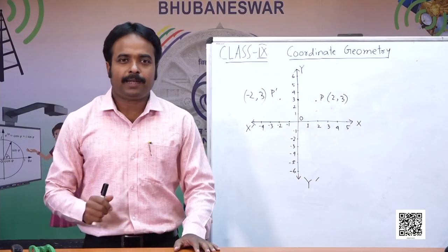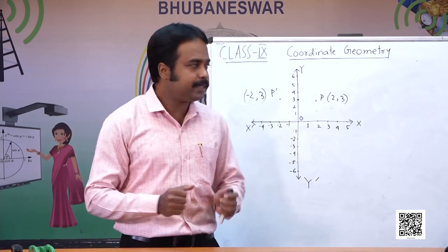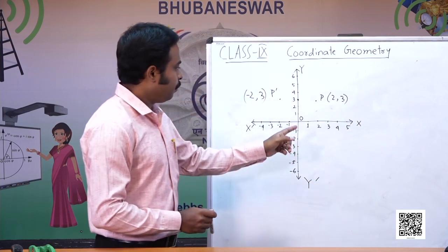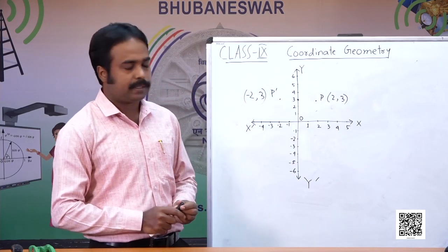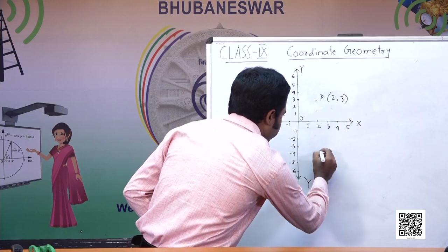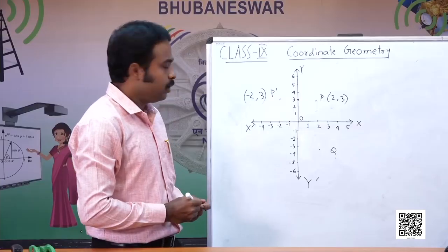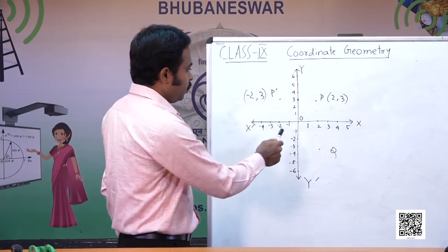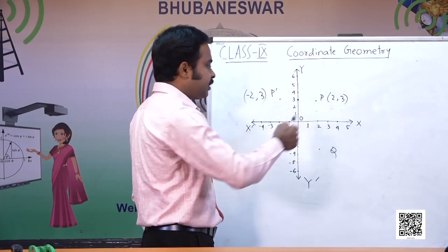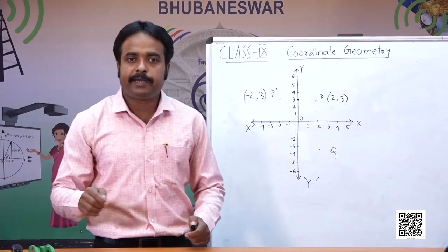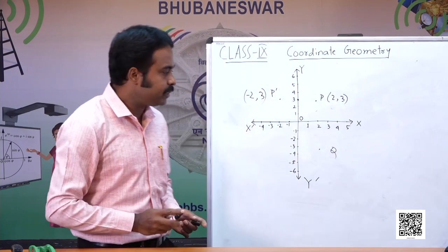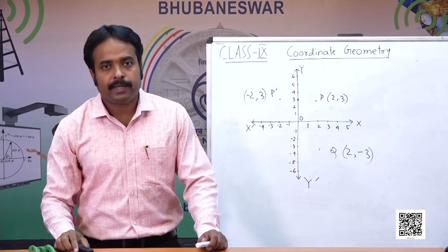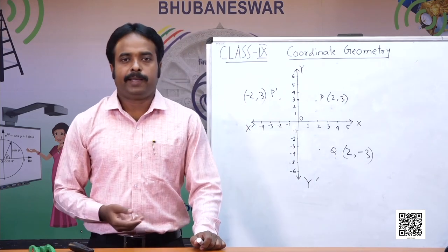Can you tell the reflection of the same point about the x-axis? The distance of point P from the x-axis would be the same as the reflected image from the x-axis. We have to go two units along the positive x-axis and three units along the negative y-axis. Therefore, the coordinates of Q are 2 comma minus 3. In this way, we can find the reflection of any point with respect to the x-axis or y-axis.